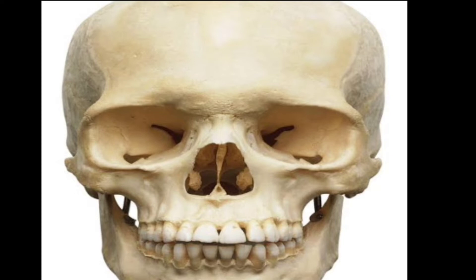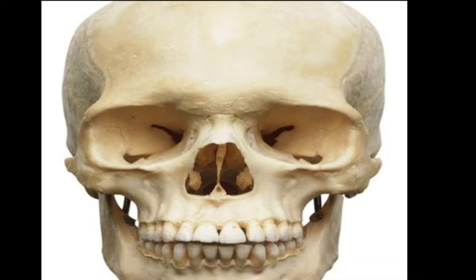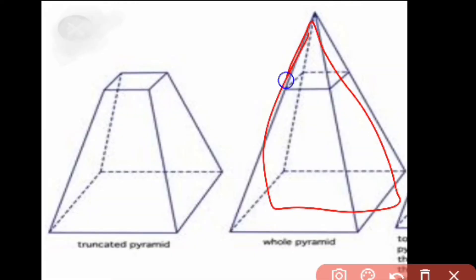The orbit is quadrangular in shape and is a truncated pyramid. A regular pyramid has only one surface, whereas a truncated pyramid has two surfaces — so the orbit is in the shape of a truncated pyramid.